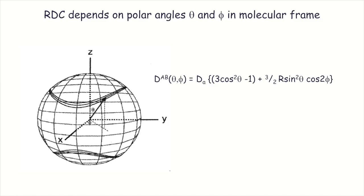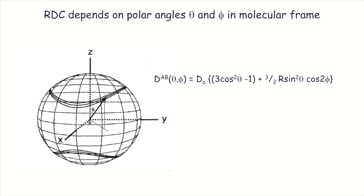These dipolar couplings are related to molecular structure by a simple trigonometric equation. The dipolar coupling D between nuclei A and B is a function of angles theta and phi — the polar angles describing the orientation of the inter-nuclear vector in the alignment frame of the molecule. The alignment frame is the molecular frame chosen to coincide with the alignment frame of the protein. Over the next few slides, this equation will be derived in simple trigonometric terms, to give a feel for what alignment frame, alignment strength, and rhombicity R mean.